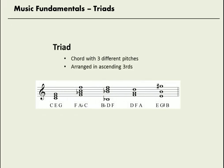A triad is a chord with three different pitches, and specifically with pitches that can be arranged in ascending thirds. Here are five examples — these are all triads: CEG, FAC, BbDF, DFA, EGBb — all have three different pitches and all can be arranged in ascending thirds.